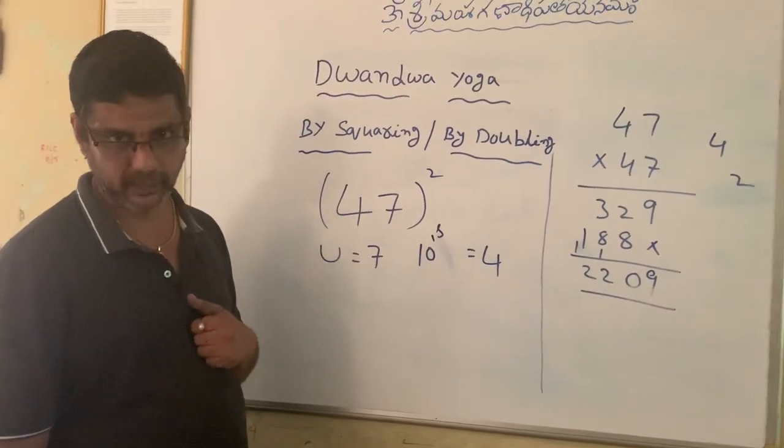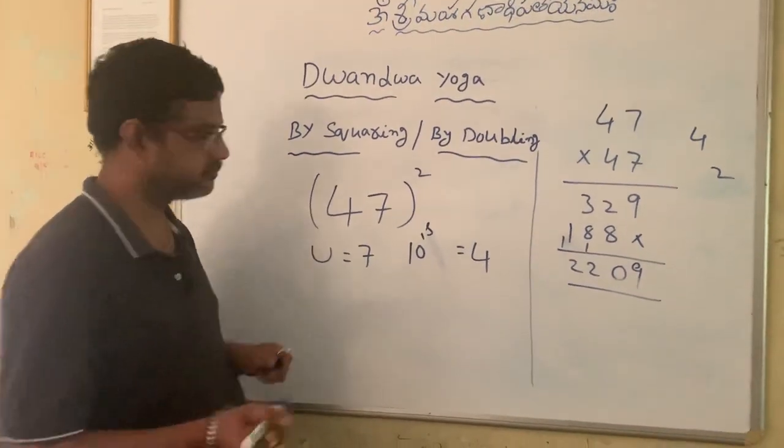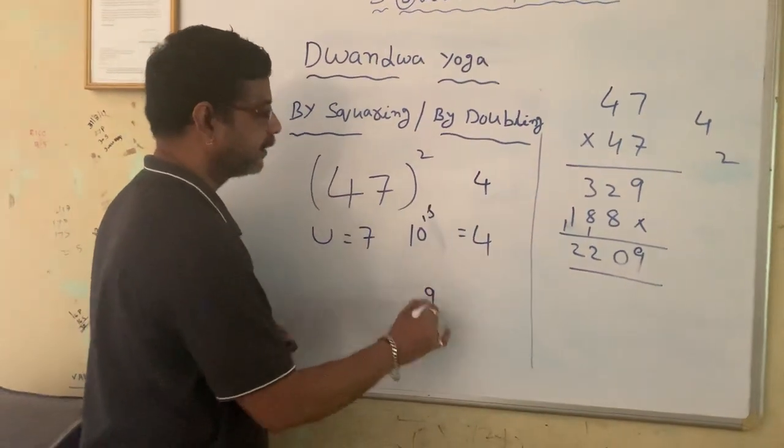Square the digit in the units place. So 7 square 49, 4 over here, 9 over here.